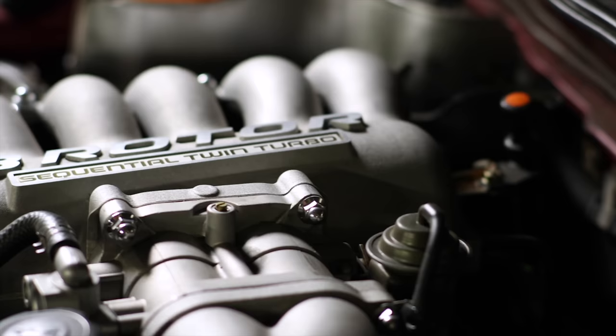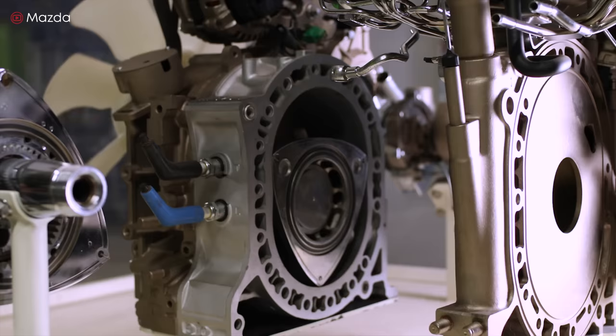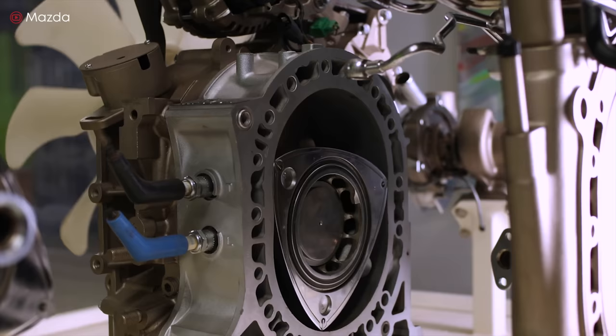These cars had a rotary engine with a volume of just 1.3 liter, which produced 232 horsepower. That's a lot of output for such a small volume. Let's look at some of its features.